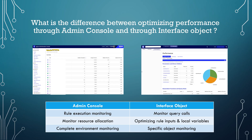What is the difference between optimizing performance through the admin console and through the interface object? While opening the Appian administration console, we have a section called Monitoring, and under Monitoring we have Rule Performance. Rule Performance gives you insight into all the objects within the Appian environment — how many times an object has been executed, average time taken, or minimum time taken. It also helps you monitor resource allocation, like how many Appian engines have been allocated.